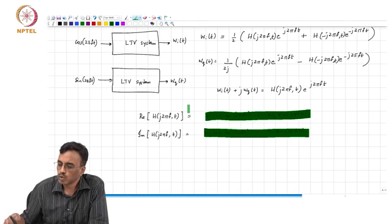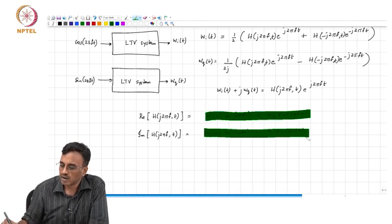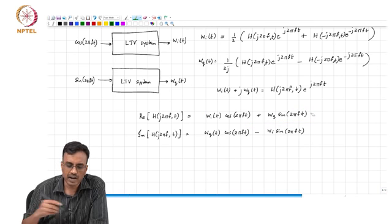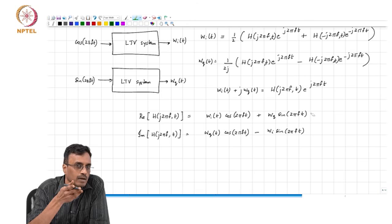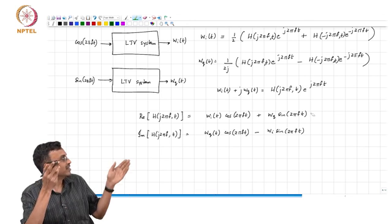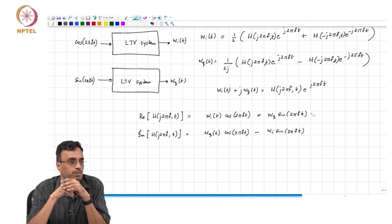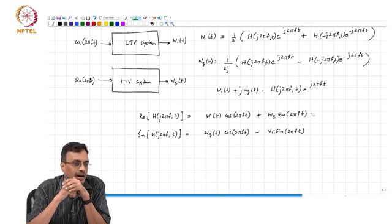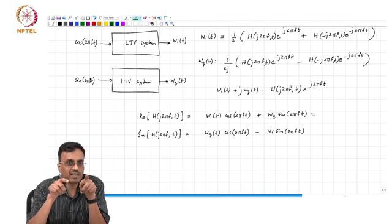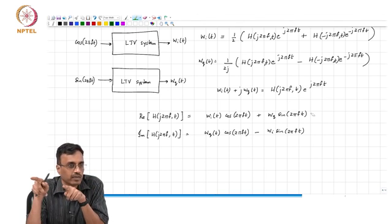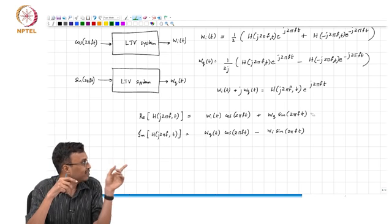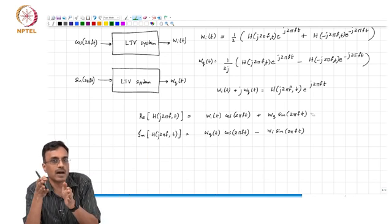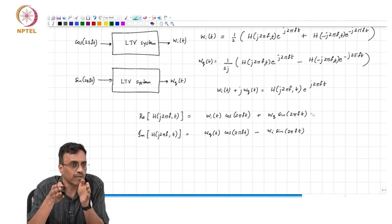Now can we now say, oh well we do not need the sine, because the sine is simply a delayed version of the cosine? Remember that this is a time varying system. So the response to a delayed input will not yield the delayed response. So the sine is a delayed version of the cosine, but that does not mean that W_q will simply be a delayed version of W_i.